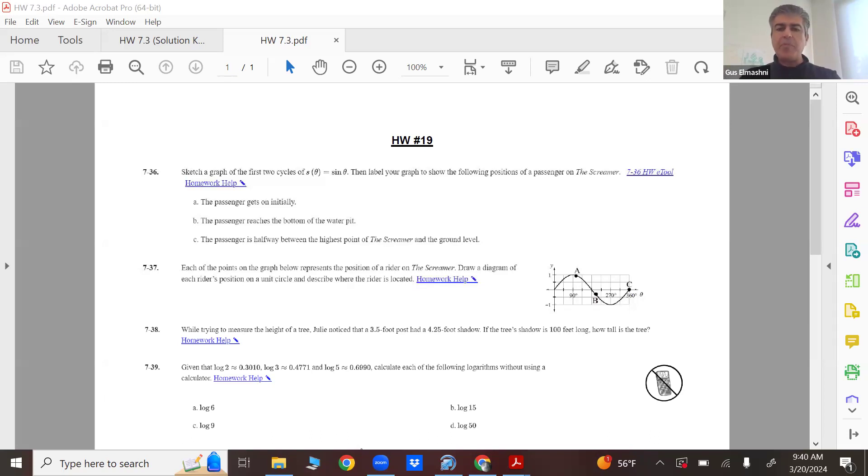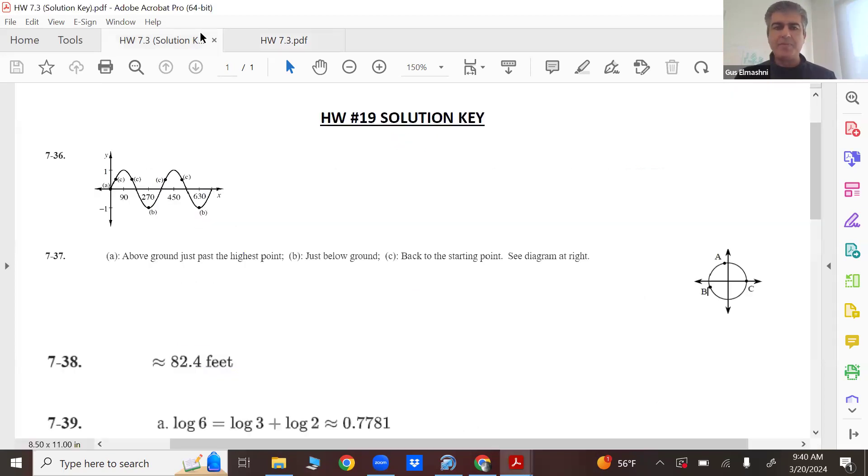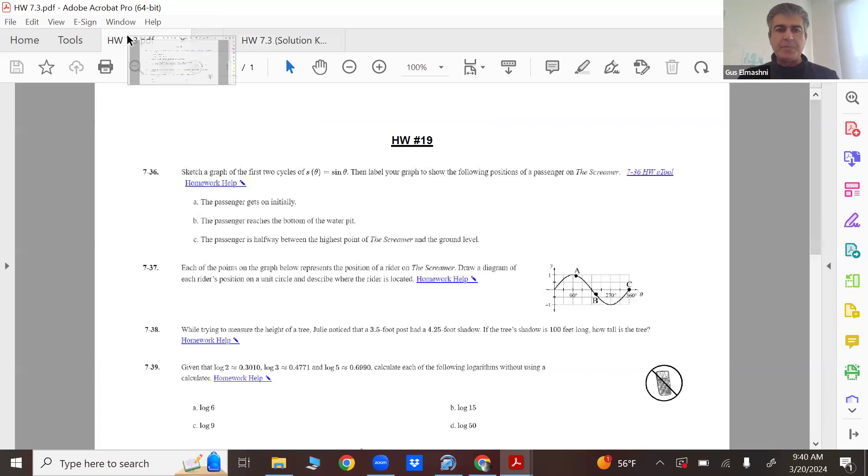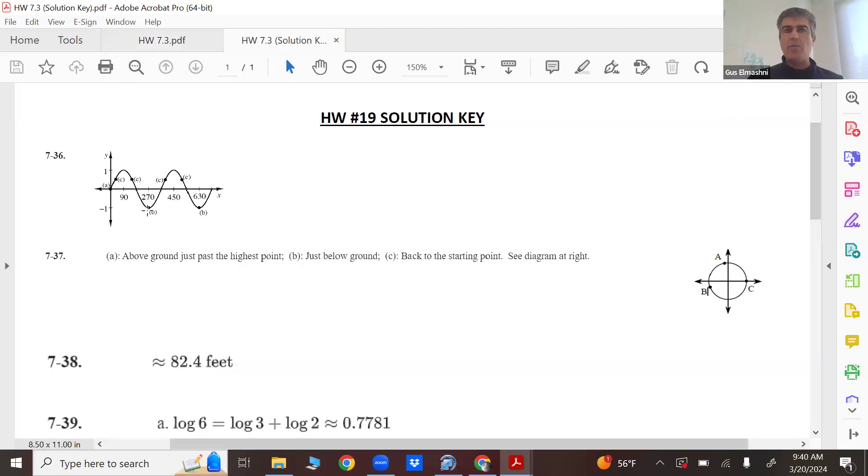For 736, what we were told to do is look at the graph of sine, and on the graph of sine, relate that to where this passenger boarded the ride. So if you get on initially, that's at zero degrees. So locate zero degrees on the graph, right? Not hard. So that's why A is right at the origin.